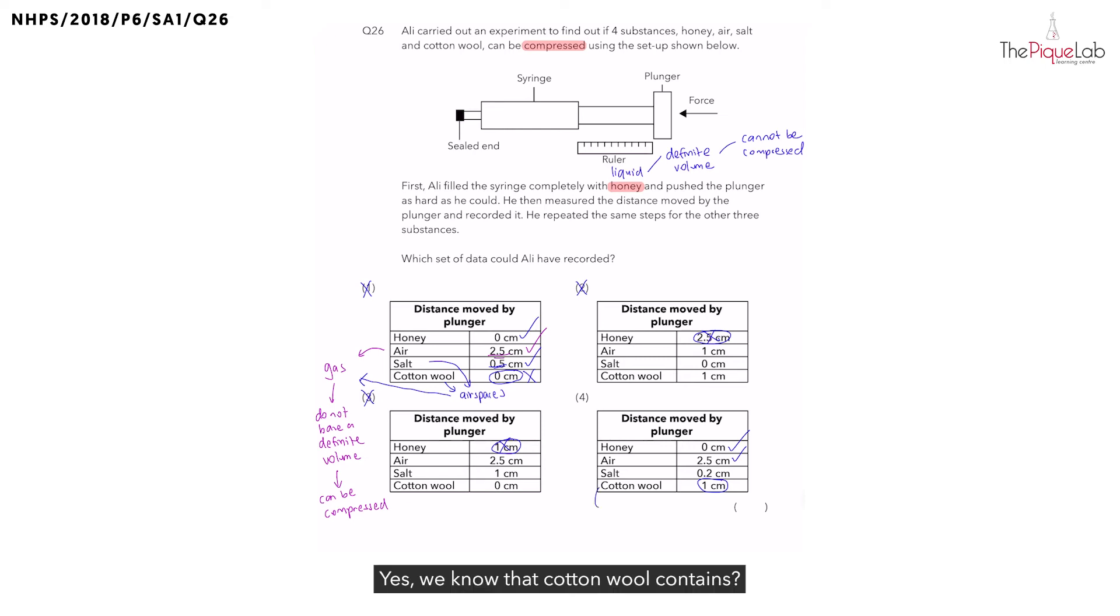Yes, we know that cotton wool contains larger air spaces compared to salt, which means there is going to be more air present in the cotton wool. So, comparing cotton wool and salt, which one do you think can be compressed more? Yes, it will be the cotton wool, or more specifically, it can be the air in the cotton wool that can be compressed more. Which means the distance moved by the plunger for cotton wool, should it be larger or smaller compared to salt? It should be larger. And we see that in the table for option 4.